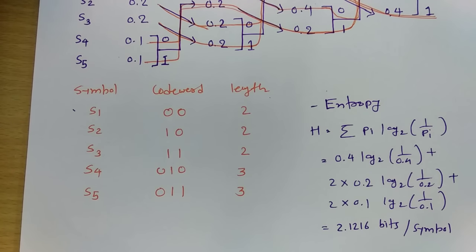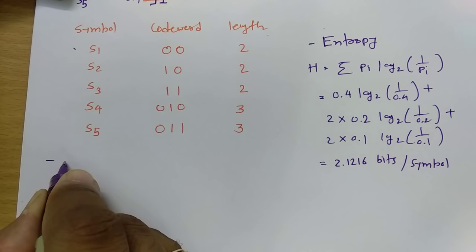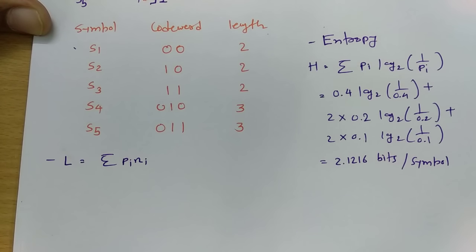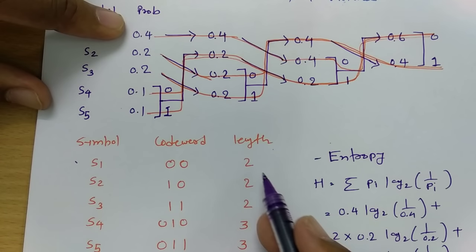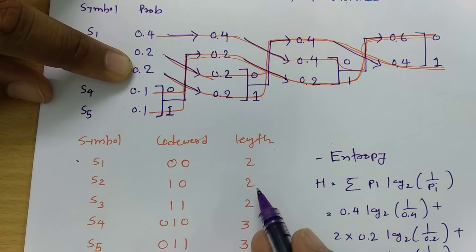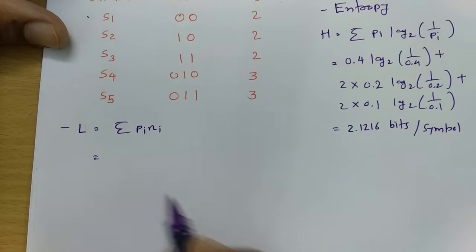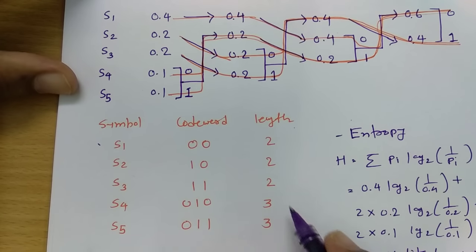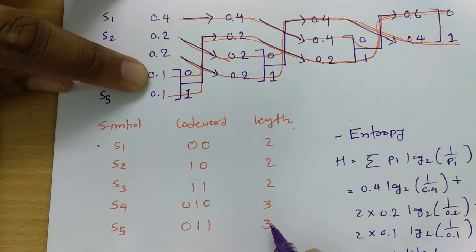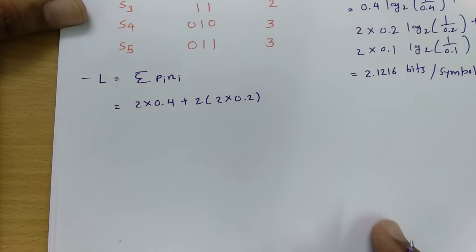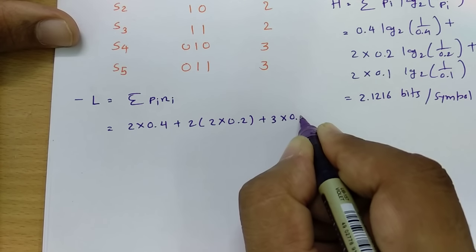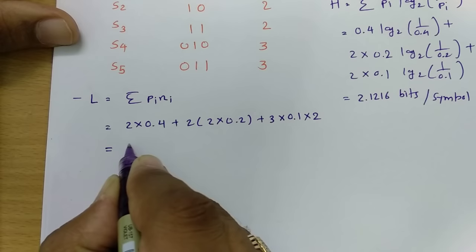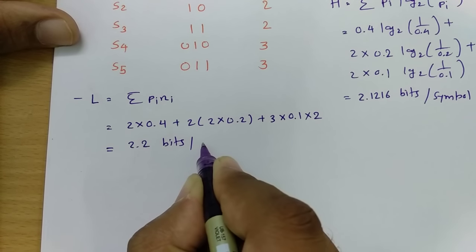Now calculate average code word length L equals summation of p_i × n_i. That is: 2×0.4 plus 2×(2×0.2) plus 2×(3×0.1), which equals 2×0.4 plus 2 times 2×0.2 plus 2 times 3×0.1. Calculating this gives L equals 2.2 bits per symbol.